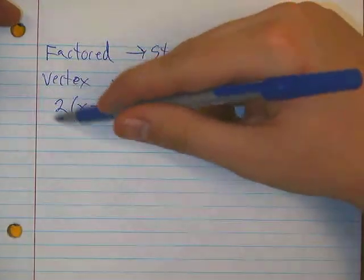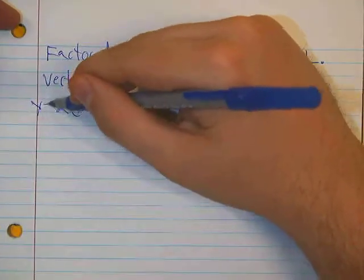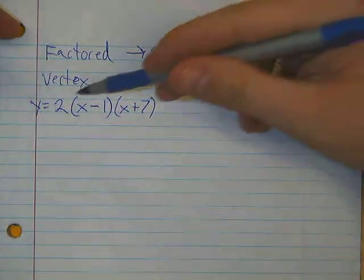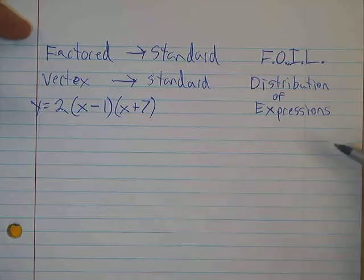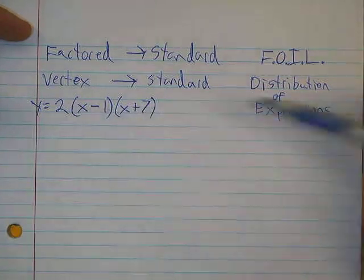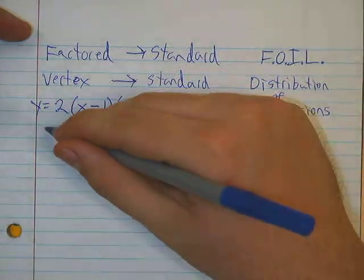Now in order to go from factored form, which this is in right now, to standard form, all you really have to do is expand this and get rid of all of your parentheses. Really all I'm saying is I want you to multiply all of these out.